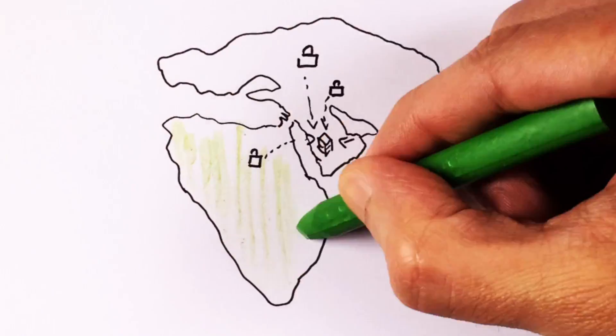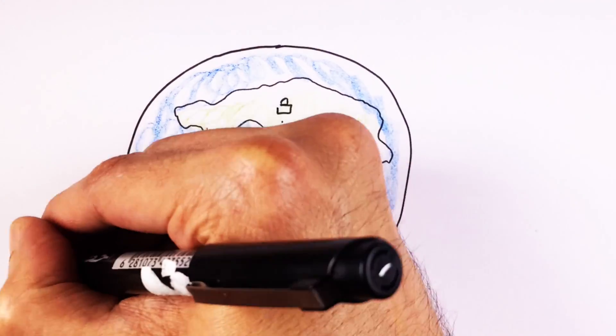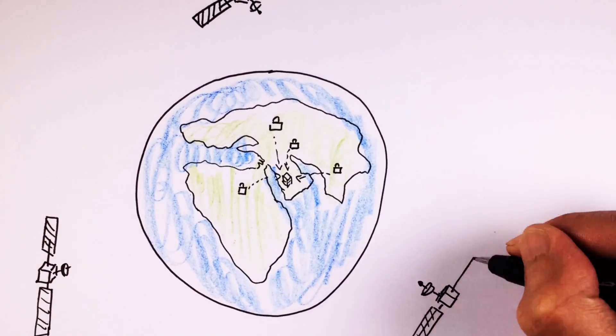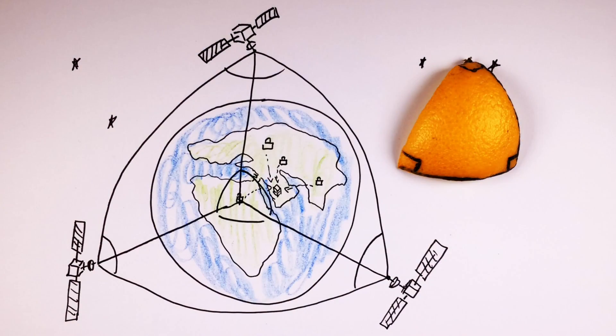In present times, most mosques face the Kaaba accurately, and most of us use GPS or Google Earth to find our way. But Google Earth and GPS still use the basic laws of spherical trigonometry that were developed during that time.